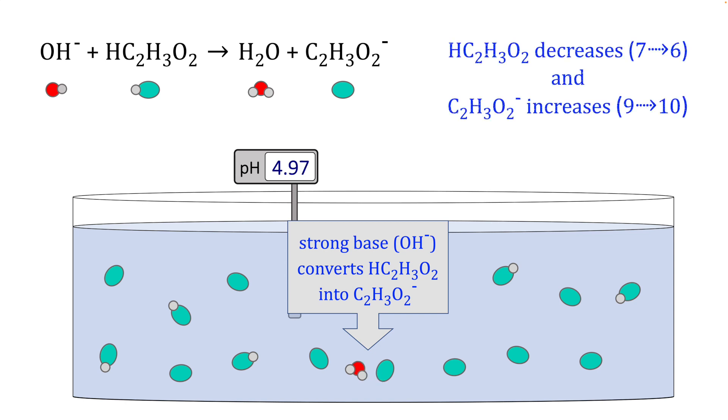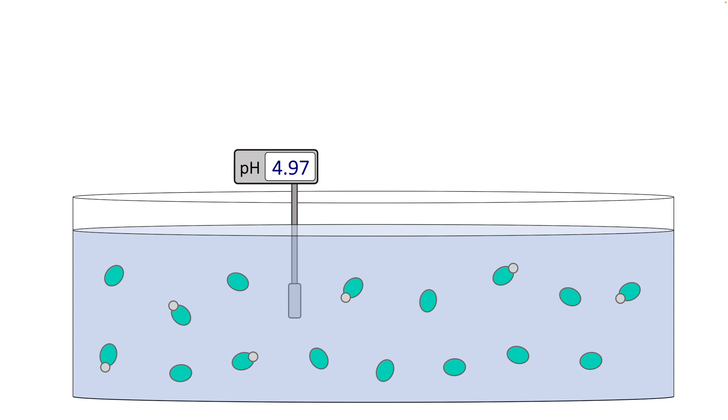Now in this case, the amount of acetic acid decreases further from 7 to 6 molecules. The amount of acetate ion increases from 9 to 10 in this case. And once again, we let the water go into the background, the water formed by this reaction. And the pH undergoes another slight increase from 4.86 to 4.97 this time. And the volume increased a little bit as well due to the additional added base.